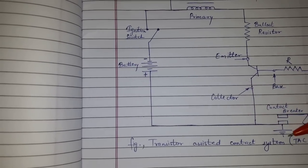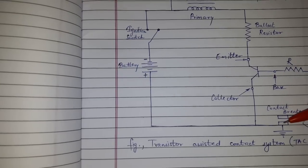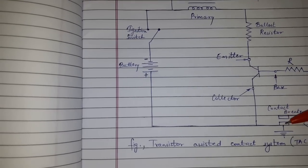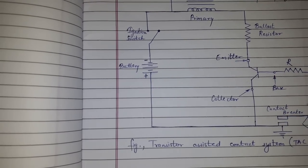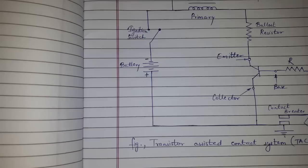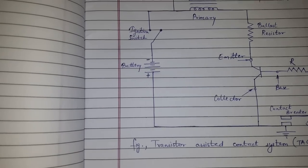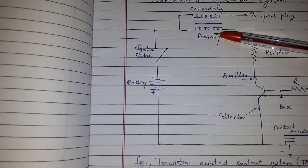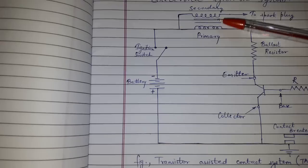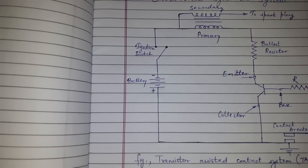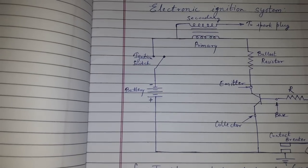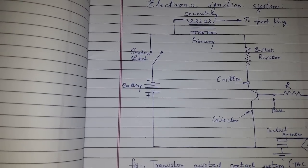As the contact opens, the base circuit is disturbed and the transistor is turned off. The current in the primary gets affected, which produces spark in the spark plug. So this is how the electronic ignition system, that is transistor assisted contact system, construction and working.